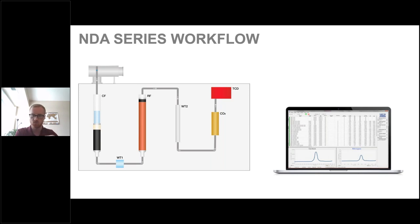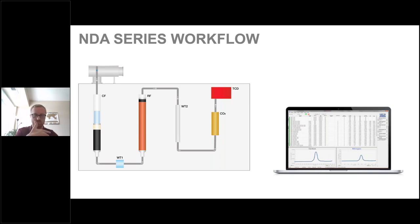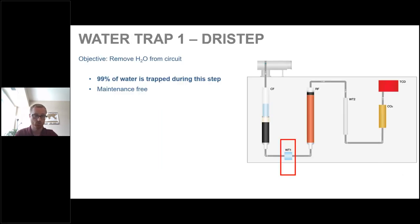Looking at the instrument workflow: the autosampler pushes the sample — whether food, agricultural, or chemical — into the combustion furnace, where it is rapidly combusted. The gas then passes through our first water trap, which removes about 99% of water using a maintenance-free physical trap with a Peltier fan. This step protects the downstream reduction furnace and saves on consumables. In the reduction furnace, NOx is converted into N₂ using finely ground copper and copper oxide.